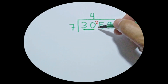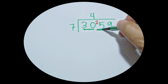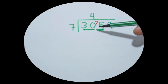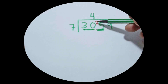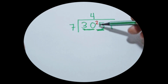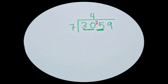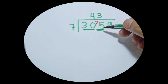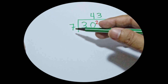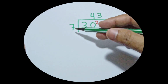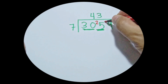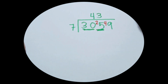It will become 25. So the next question is how many 7s can you make from 25? We can make 3 sevens. 3 times 7 is 21, and 25 minus 21 is 4. We write that remainder 4 to the next number, so it will become 49.